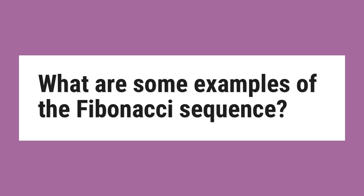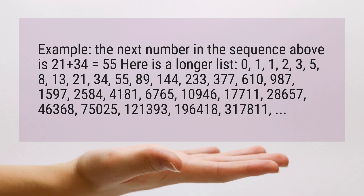What are some examples of the Fibonacci sequence? Example: the next number in the sequence above is 21 plus 34 equals 55. Here is a longer list: 0, 1, 1, 2, 3, 5, 8, 13, 21, 34, 55, 89, 144.